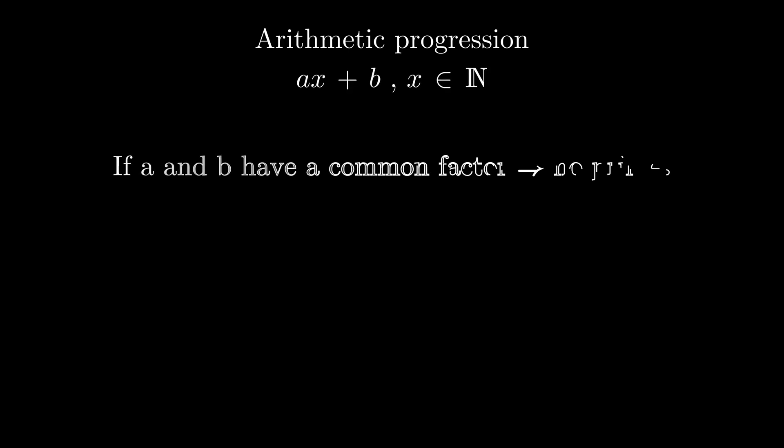But I want to end this video on a positive note. Let's think about arithmetic progressions. If a and b have a common factor, then all of the terms will be divisible by that factor, and so the sequence will not contain any primes.